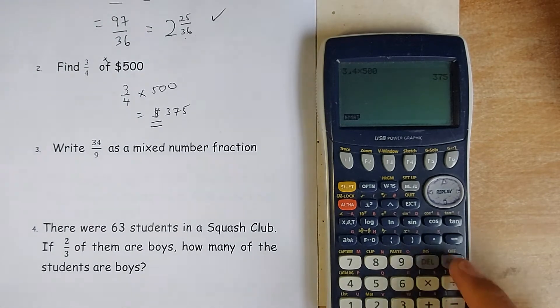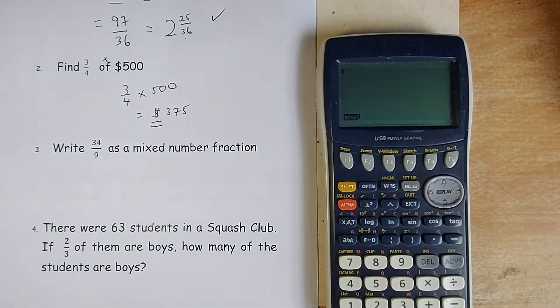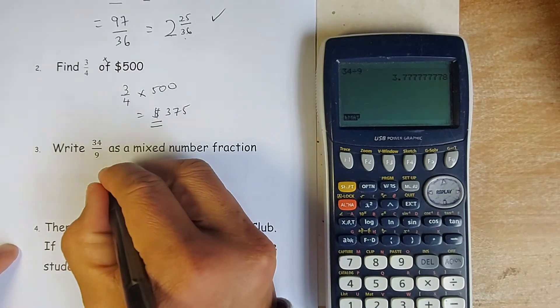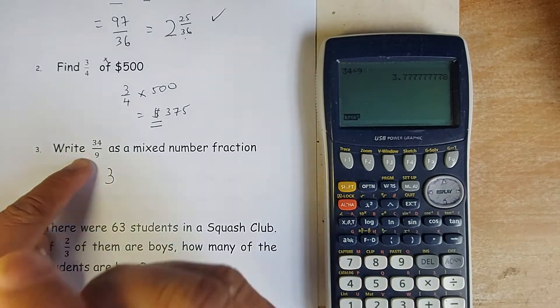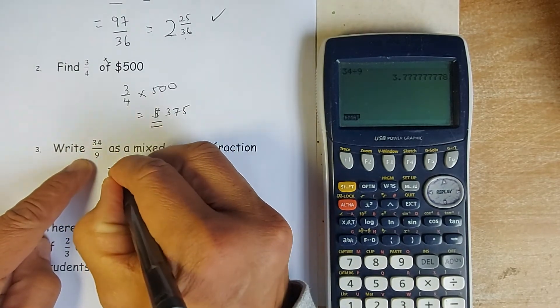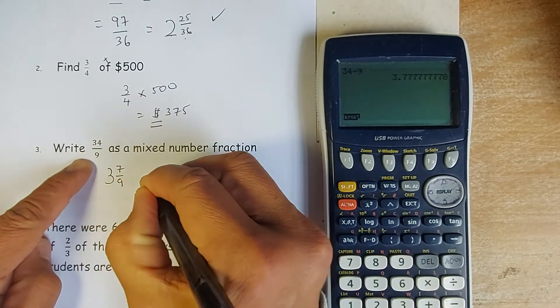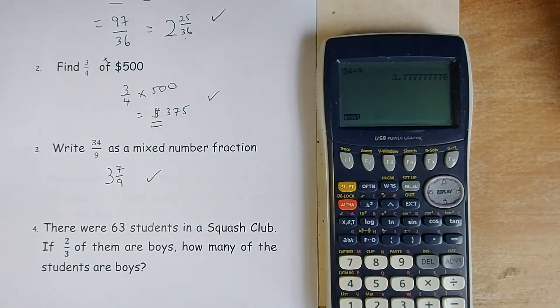We carry on now. The next number is express 34 over 9 as a mixed number fraction. So what you do, the first thing you do, you divide 34 divided by 9 and the answer is 3.7. So 3 is the whole number. So 3 times 9 is 27, 27 to get 34, there's another 7 more. So 7 over 9 and that will be the next mark. Not too bad, right?